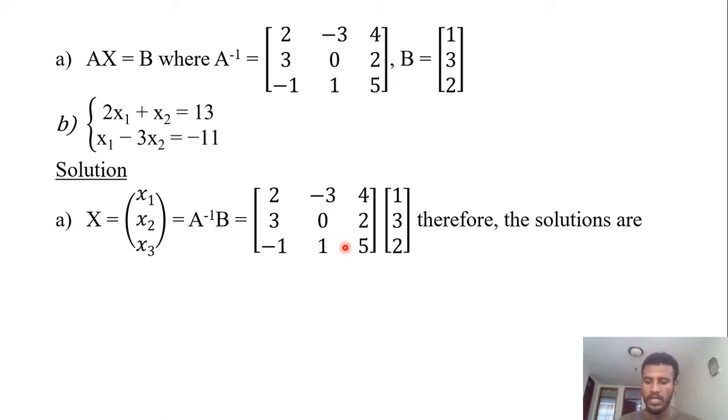So the solution will be x₁ = 1 after calculating: 2 times 1 plus -3 times 3 plus 4 times 2. The value of x₁ will be 1, whereas the value of x₂ is 7 after calculating this value, and finally x₃ will be -5. Please try it on your paper also.